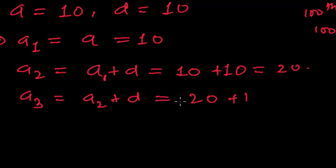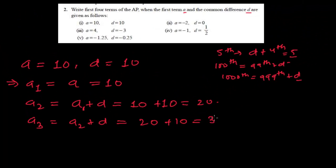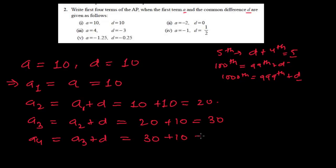So adding the common difference, that is 10, to 20. So 20 plus 10, that is 30. Now I am writing the fourth term, that is the third term plus the common difference. The third term is 30, and the common difference is 10. So 30 plus 10, that is 40. So we need the fourth term — we got the fourth term.